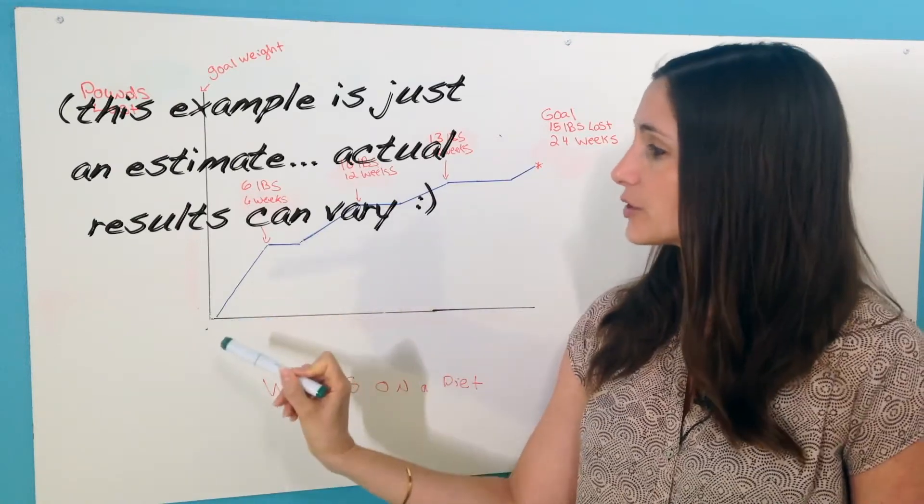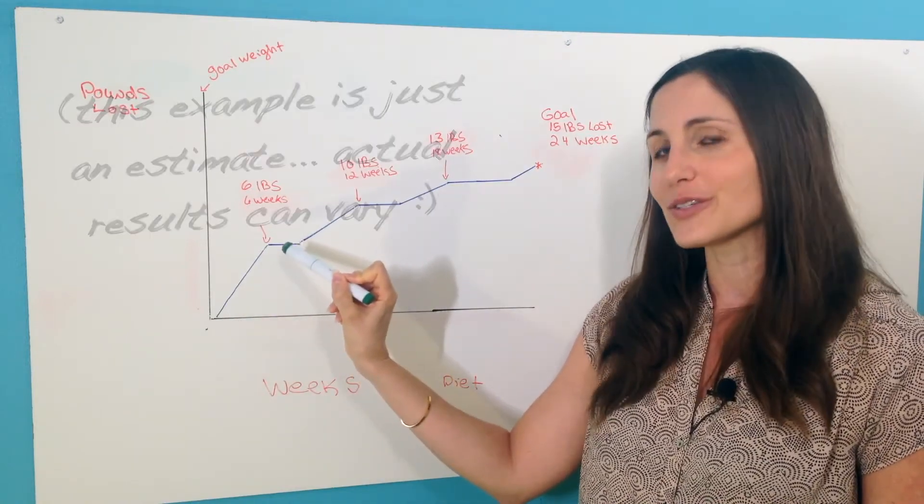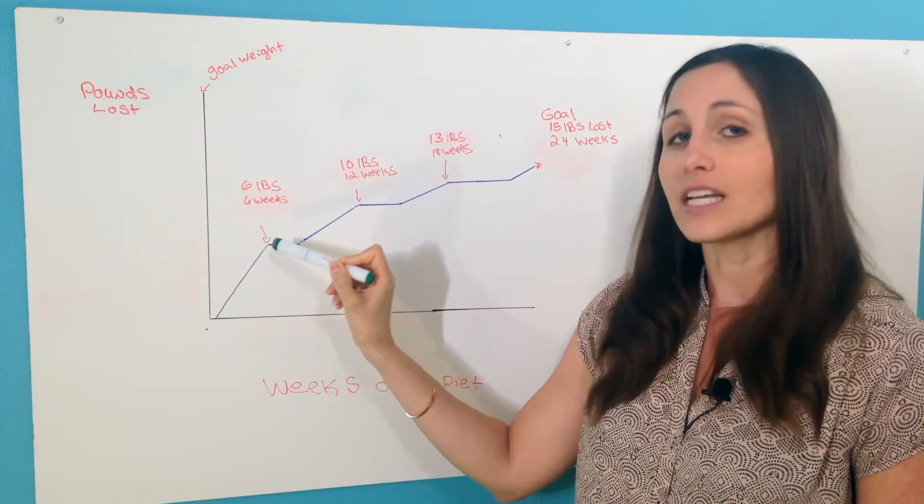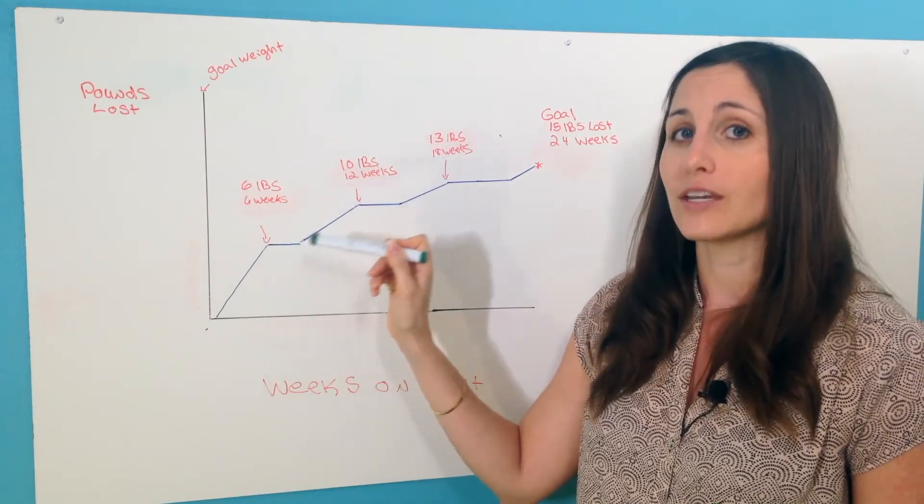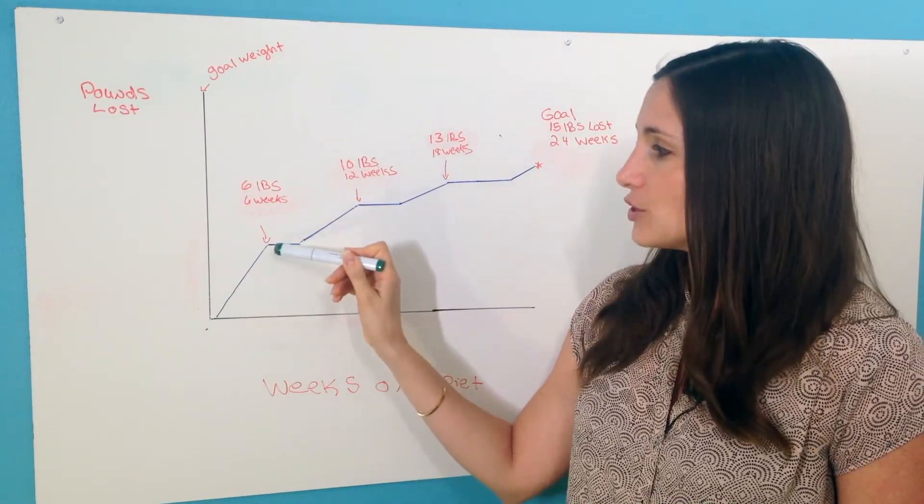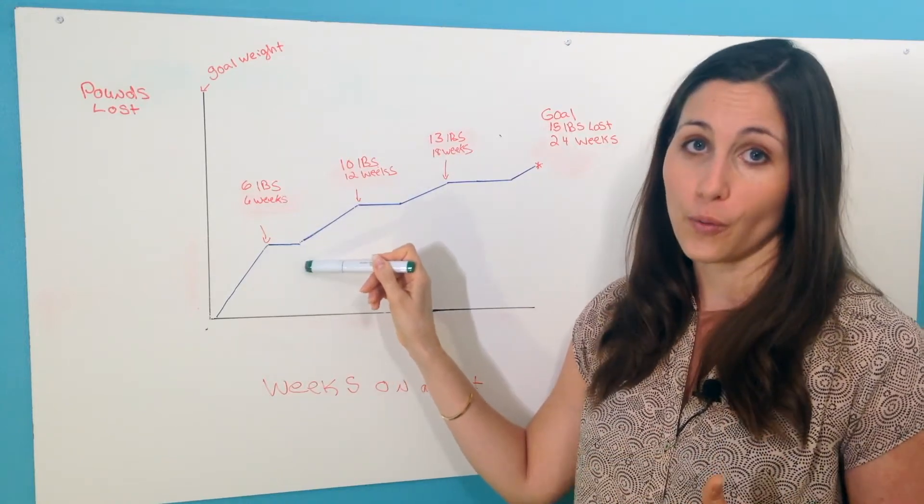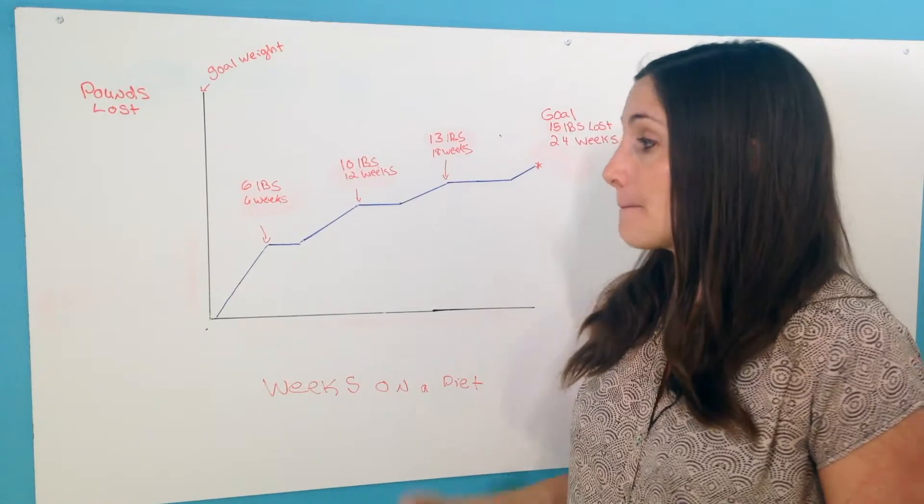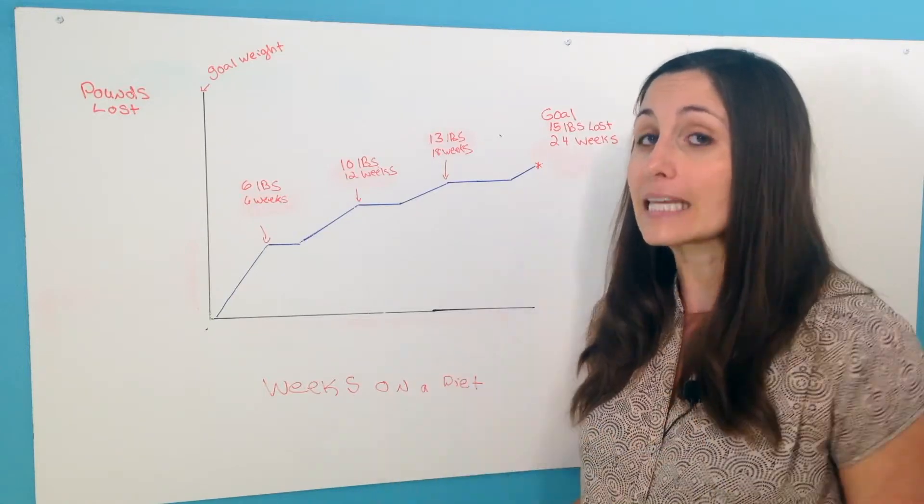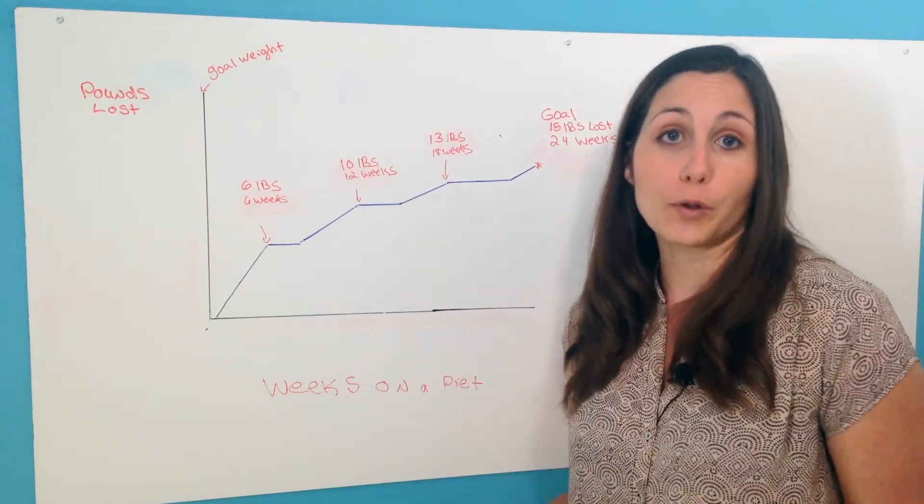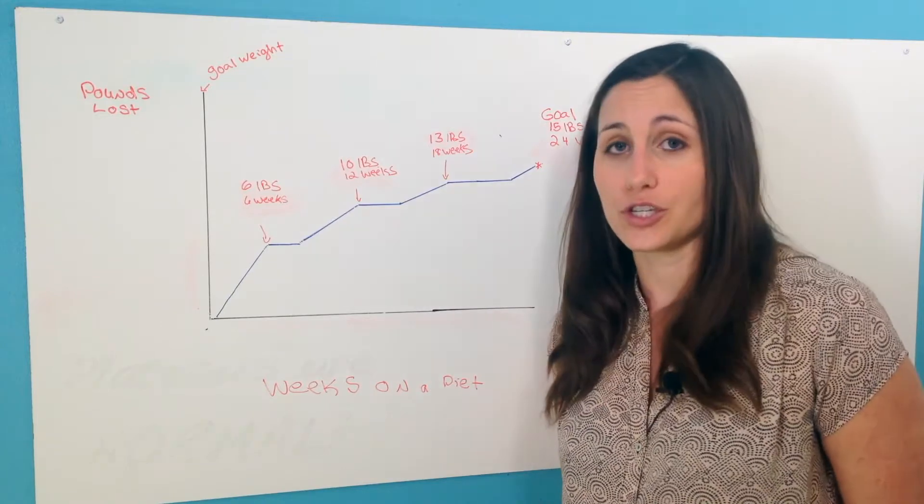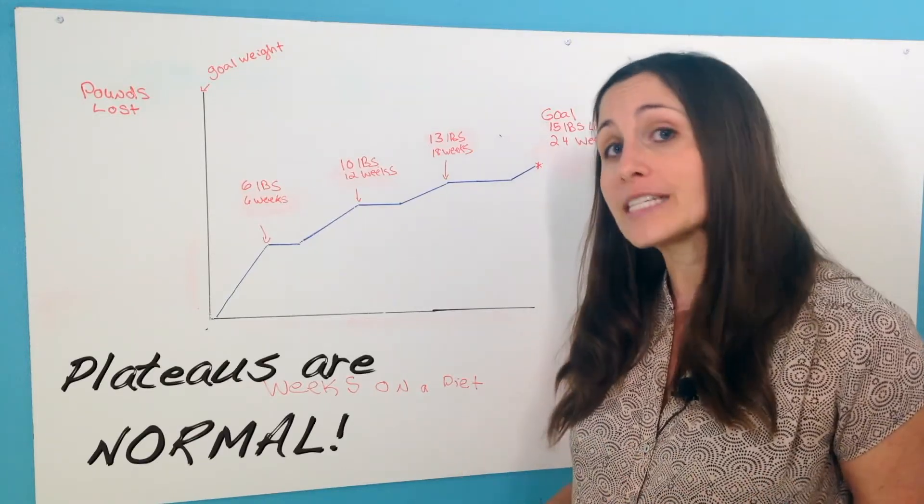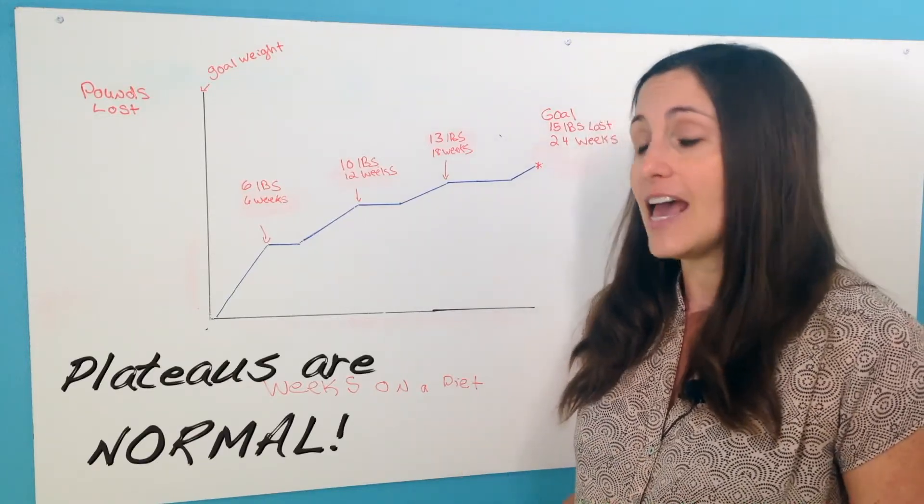And all of a sudden you might stop losing weight and then you'll sort of plateau, which is a dreaded word for a lot of chronic dieters. But the thing is, it's a completely natural and normal part of body composition change. So you're going to have plateaus and you just need to accept them.